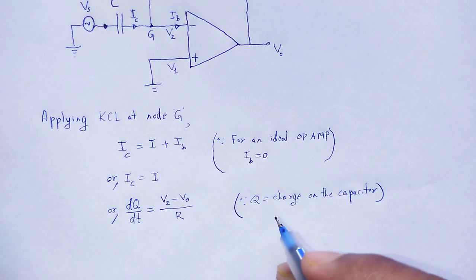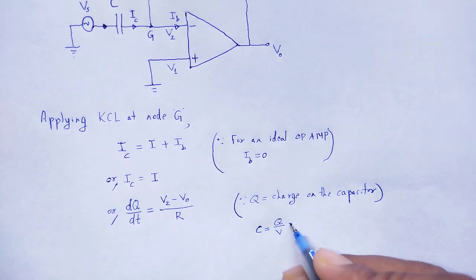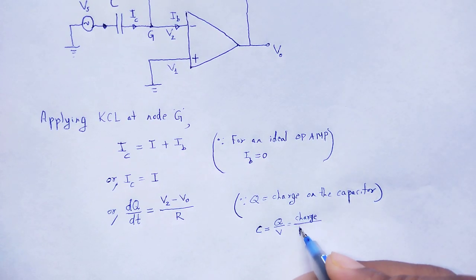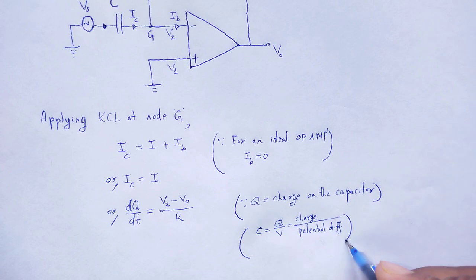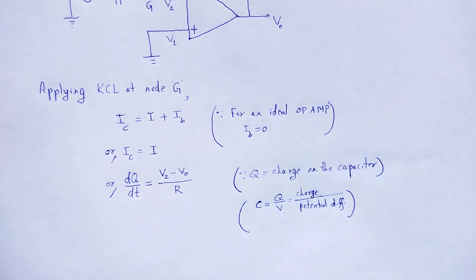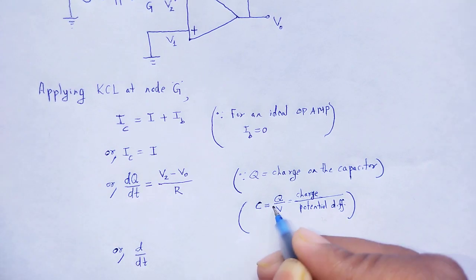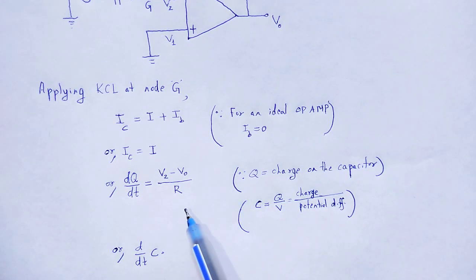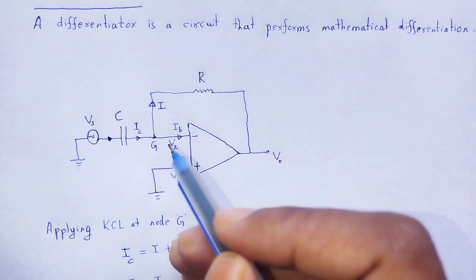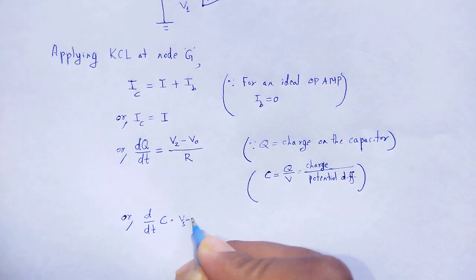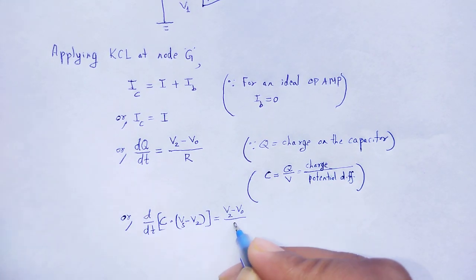Again, for a capacitor having capacitance C, the expression is C equals Q divided by V — charge divided by potential difference. So Q is equal to C times the potential difference. Therefore, d/dt of C times the potential difference across the capacitor, that is Vs minus V2, is equal to V2 minus V0 divided by R.